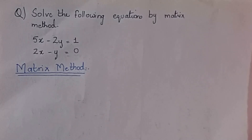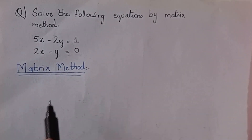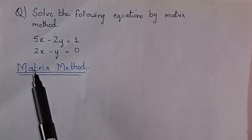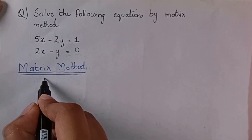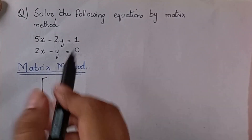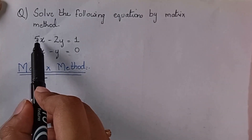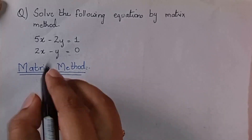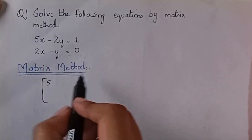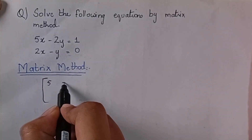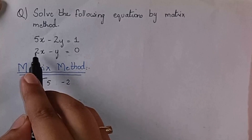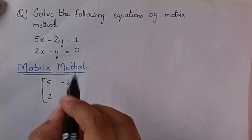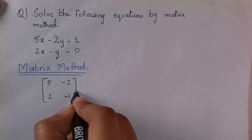The first step is to convert these two equations into the form of a matrix. We will write the coefficient matrix. In the first equation, the coefficient of x is 5 and the coefficient of y is 2. In the second equation, the coefficient of x is 2 and the coefficient of y is 1. This is our first matrix.